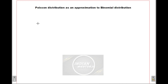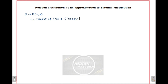Now suppose X is a discrete random variable which follows a binomial distribution — not Poisson distribution, but a binomial distribution. If it follows a binomial distribution, the parameters are n and p. Here n is the number of independent trials, and p is the probability of success in each trial, which you may have learned in Statistics 1.